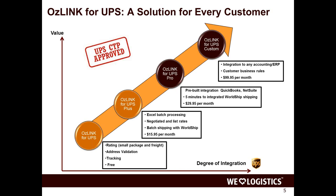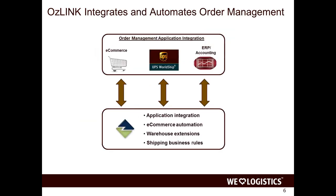At a high level, OzLink Custom integrates WorldShip with various e-commerce applications and ERPs, eliminating data entry. It integrates e-commerce from an order standpoint and also updates tracking information. Warehouse extensions include branded email, branded pack slips, and similar capabilities. Finally, it automates shipping rules — ensuring the right UPS service is used for each shipment and determining whether insurance should be enabled.